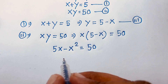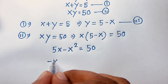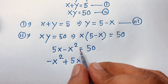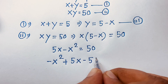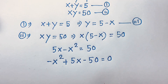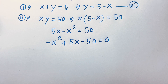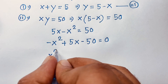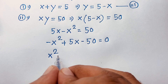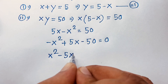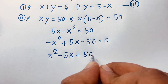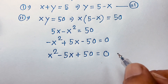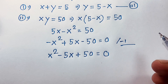Rearranging, we get minus x squared plus 5x minus 50 is equal to 0. If I multiply both sides by negative 1, it becomes x squared minus 5x plus 50 is equal to 0.